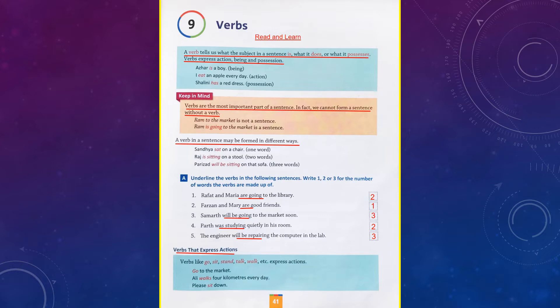Let's move on with the types of verbs. If you read the definition above, they are talking about action, being, and possession, so verbs have different categories. In my earlier video about verbs, we saw the categories to be, to have, and to do. The first category is verbs that express actions — verbs like go, sit, stand, talk, walk, etc. They are the main action verbs, whether it is mental action or physical action. A physical action like walking, eating, talking; a mental action like thinking, remembering.